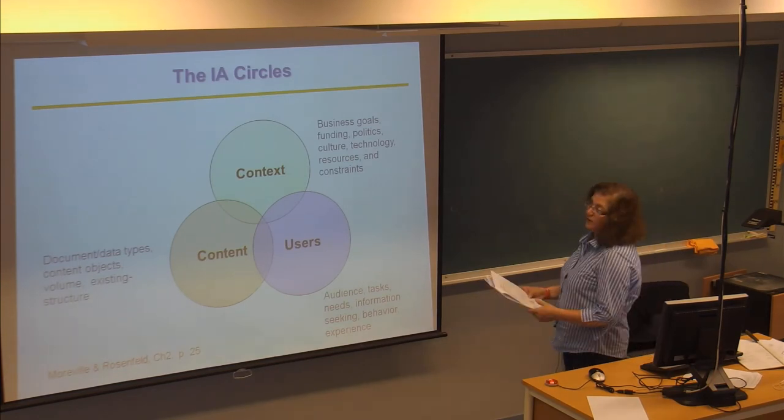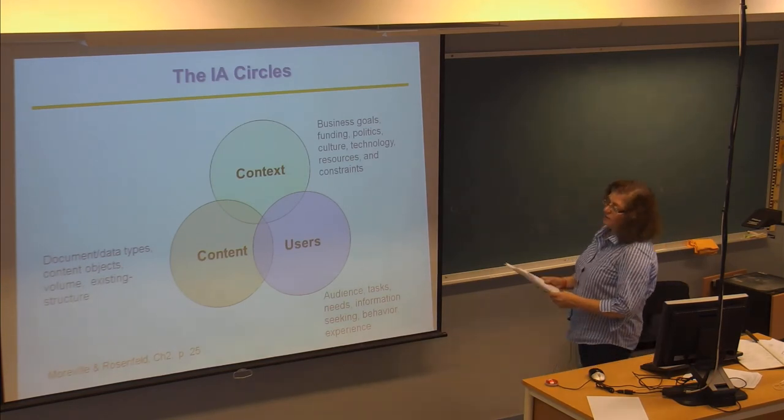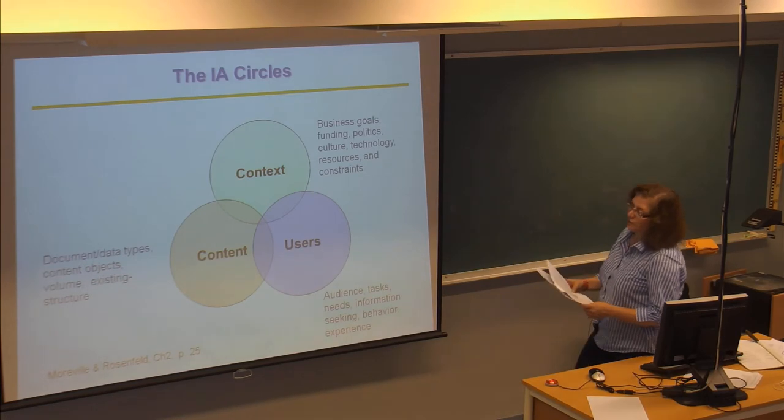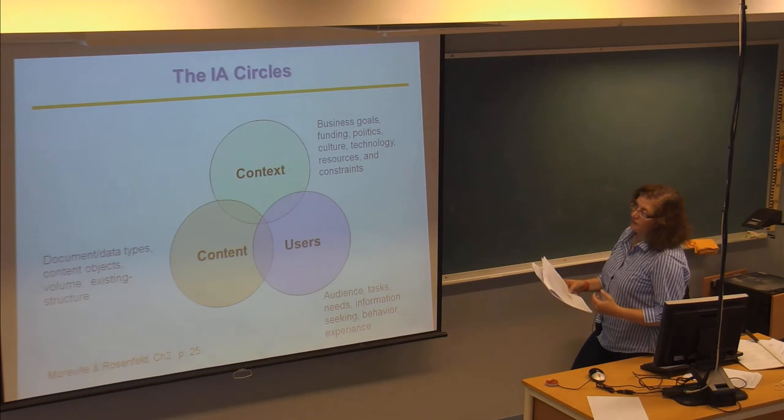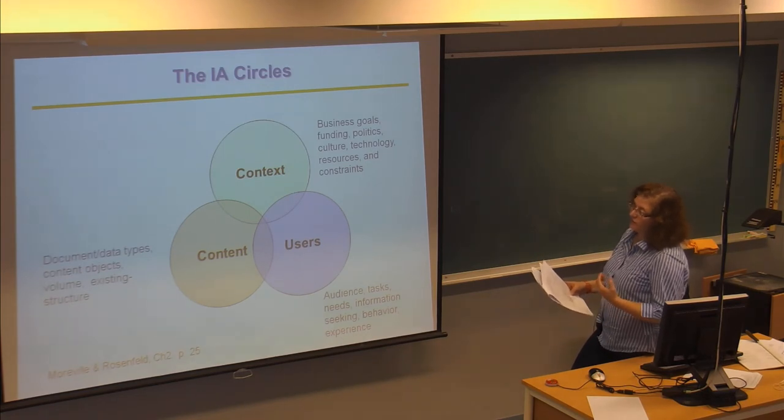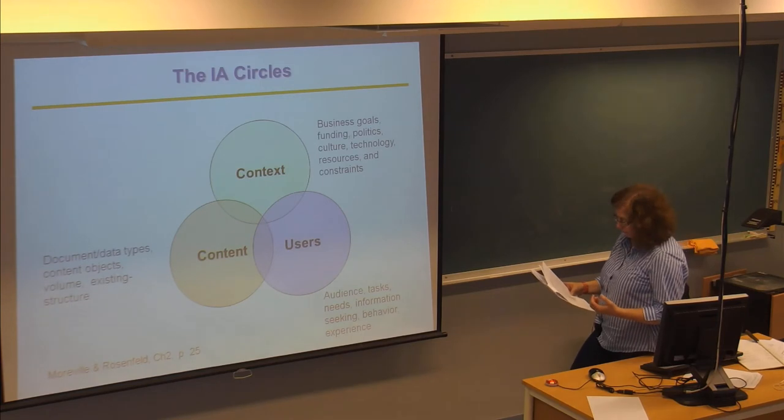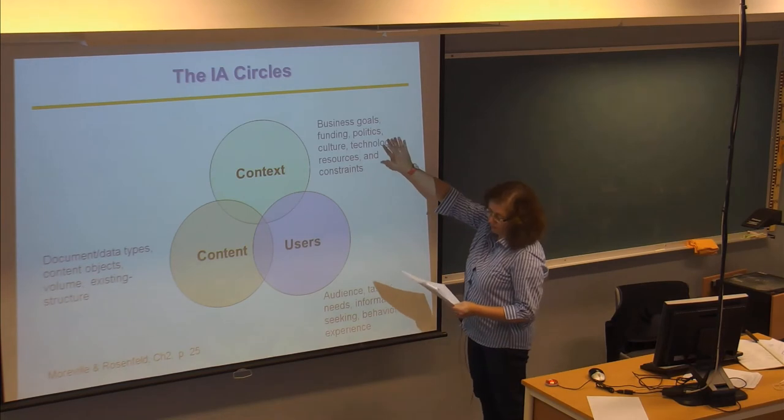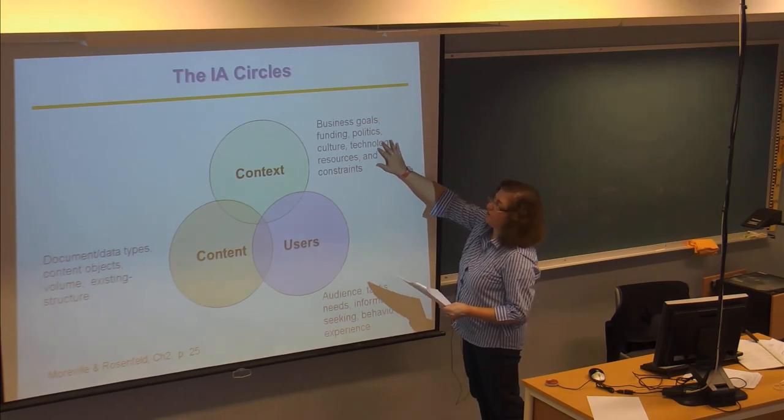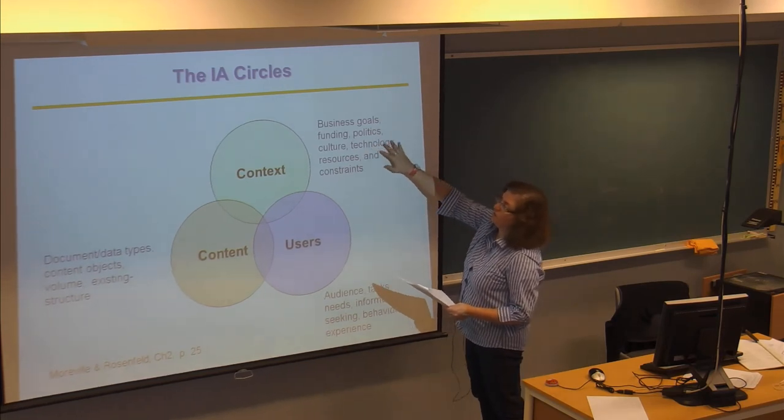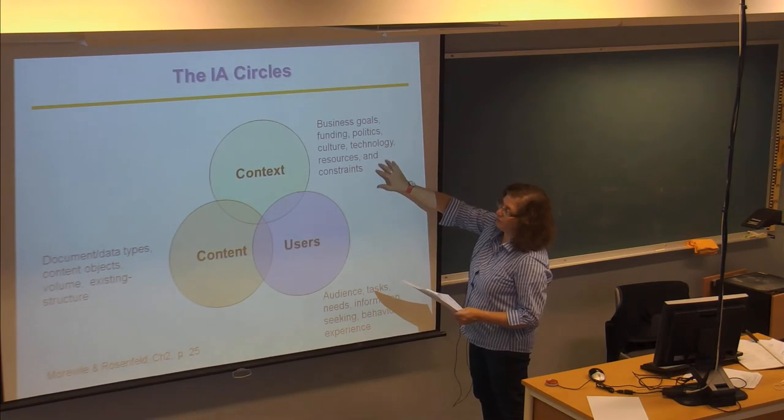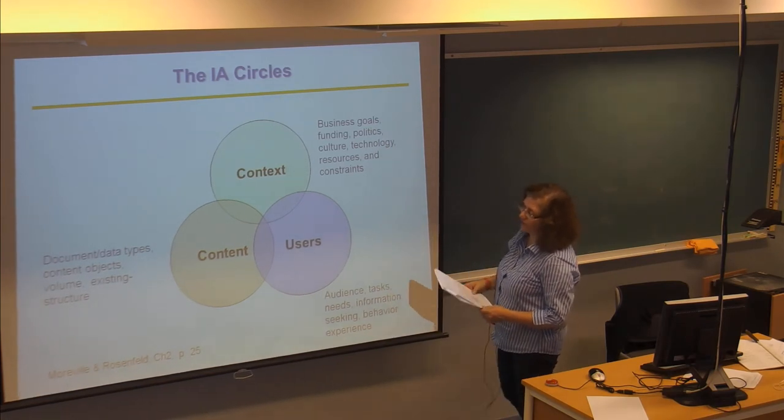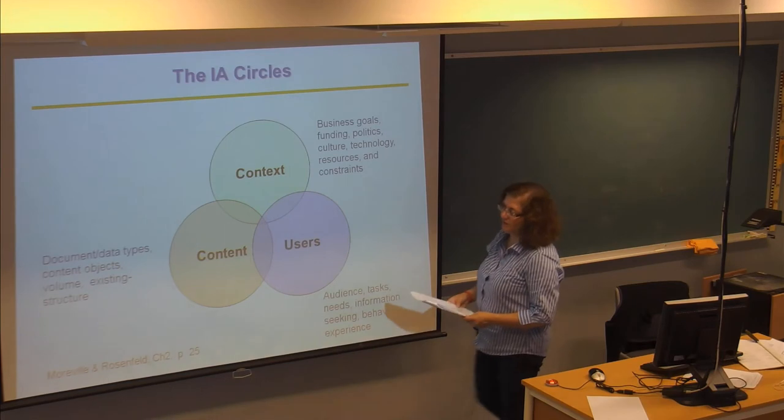This is the simple model that they talk about in chapter two. And these are the elements of the information architecture system that are important. So, you have the content and the context and the users. From the context point of view, you need to be able to frame the user's needs based on the business goals, the culture, the technology, the resources, and the constraints. From the content point of view, there's a lot here that you might include.